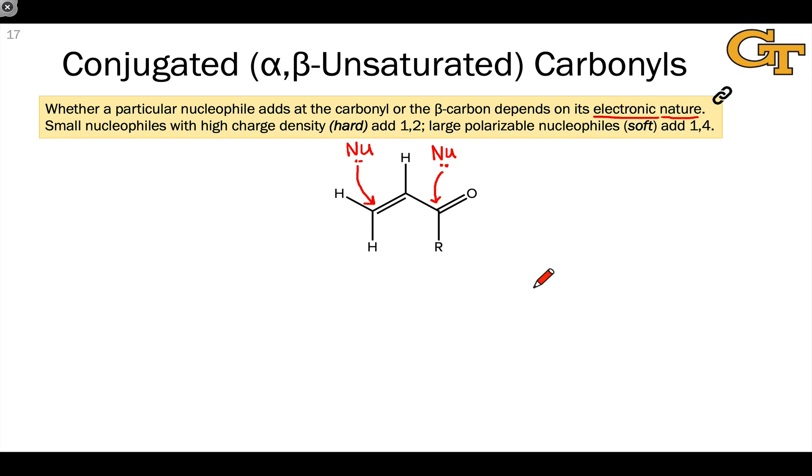To understand this, we can make use of a theory called hard-soft acid-base theory, which distinguishes between hard and soft nucleophiles. Very small nucleophiles with high charge density, so-called hard nucleophiles, add to the carbonyl carbon in a 1,2 fashion, while large, polarizable, soft nucleophiles add to the beta carbon in a conjugate or 1,4 fashion.